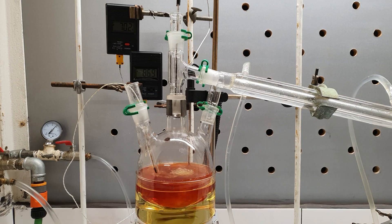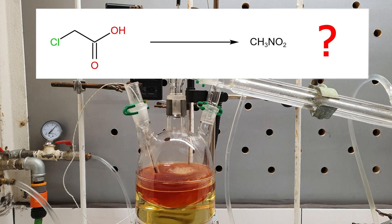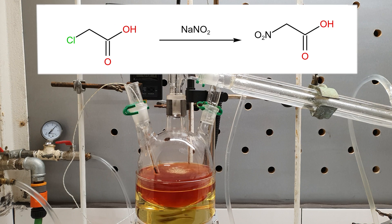Now I know what you're probably thinking. How the hell did he turn chloroacetic acid into nitromethane? Well, as I said earlier, the first step is to substitute the chlorine atom with a nitro group from the sodium nitrite.